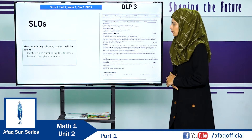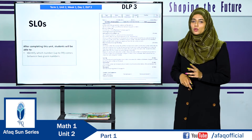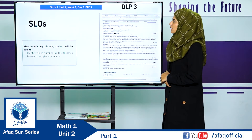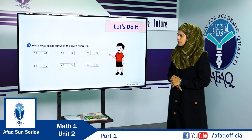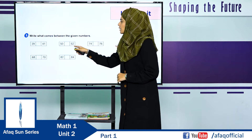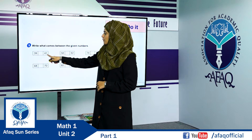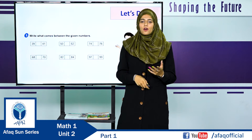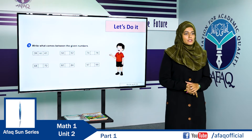In this SLO, we are going to identify which numbers up to 99 come between two given numbers. The methodology has been given in DLP 3, which falls in Term 1, Unit 2, Week 1, Day 2. On page number 31, we have to write the missing numbers in between. For example: 39, dash, 41 — we fill in 40. Do the rest of the questions by your own.